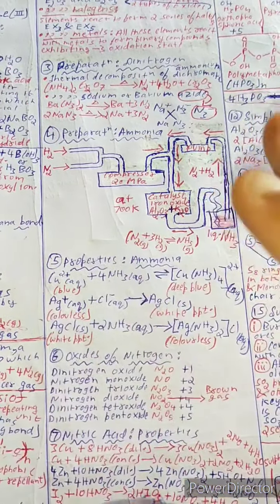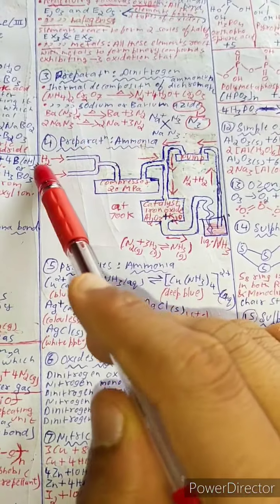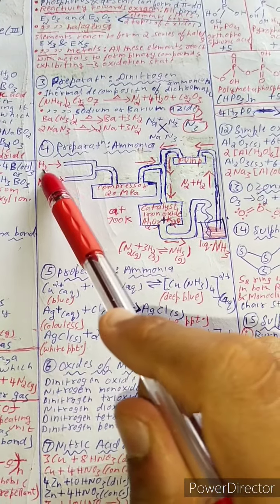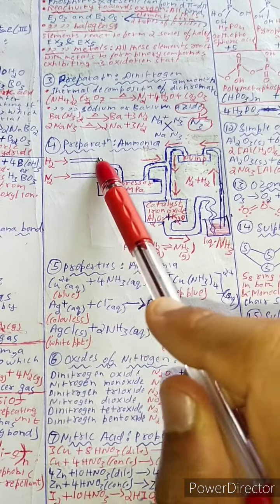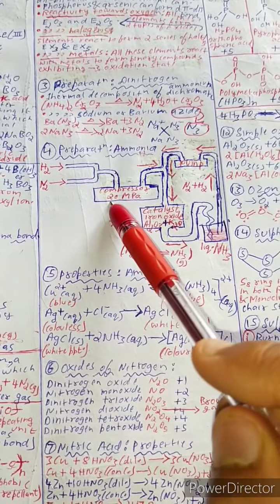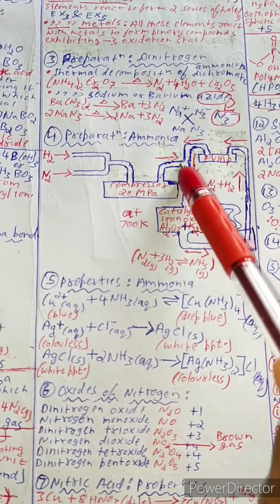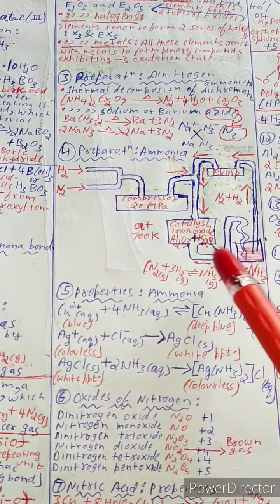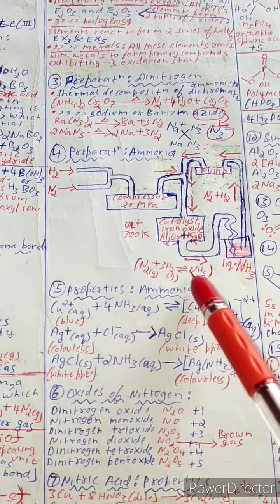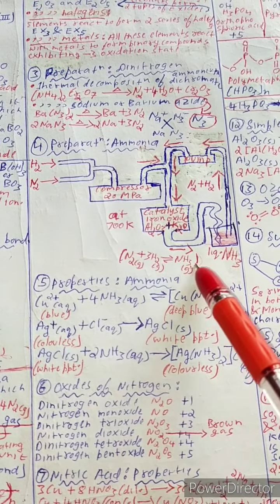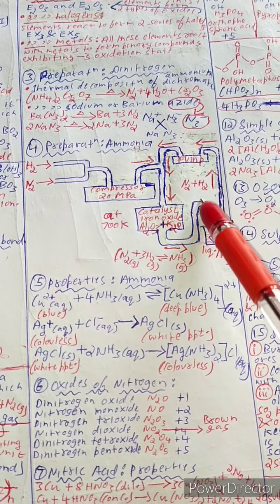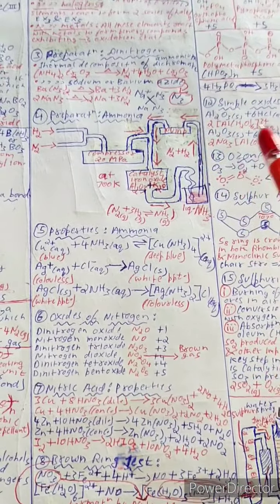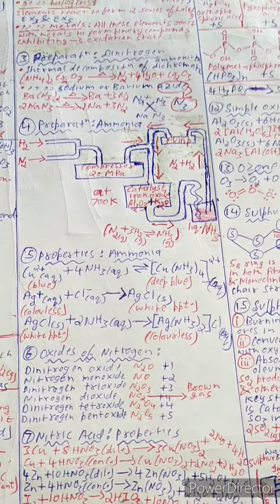Preparation of ammonia by Haber's process: hydrogen and nitrogen are passed from different sides into a compressor at 200 MPa pressure. The catalyst used is iron oxide plus potassium chromate at 700 K. The reaction: N₂ + 3H₂ ⇌ 2NH₃. Liquid ammonia is formed and the unreacted N₂ and H₂ are recycled.